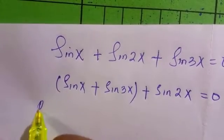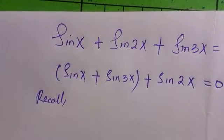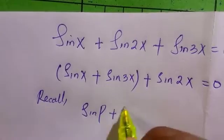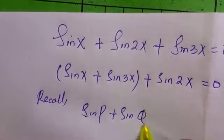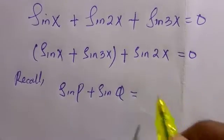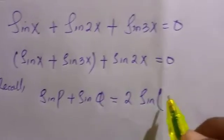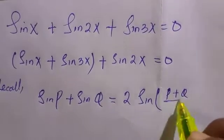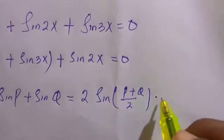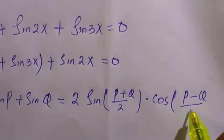When we have sin(x) + sin(3x), we recall from the sum of an angle identity: if we have sin(p) + sin(q), this is equivalent to 2sin((p+q)/2) × cos((p-q)/2). Here is the identity we are going to use to solve that problem.